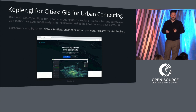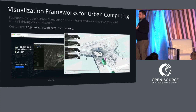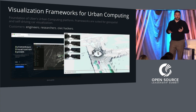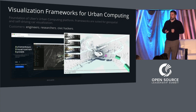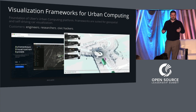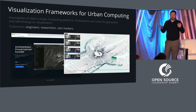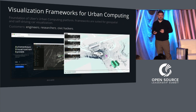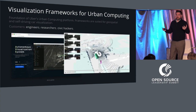Underlying Kepler GL is a whole set of visualization frameworks powering it — the foundation of Uber's urban computing platform. These frameworks are suited for a variety of applications, largely web-based, and largely around displaying millions of data points really performantly in the web browser. There are a lot of geospatial visualization use cases, but they're also powerful enough to be applied to related areas like self-driving car visualization. We've just recently open sourced our autonomous visualization system — a set of components and a visualization standard for autonomous vehicle systems.